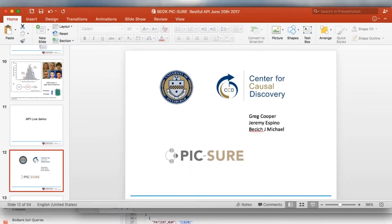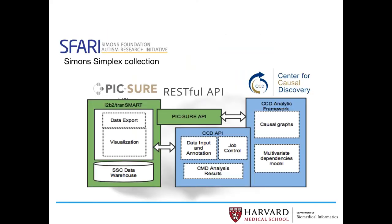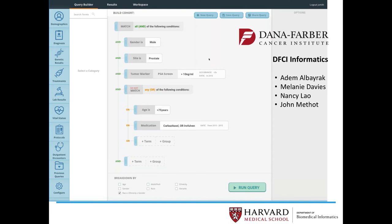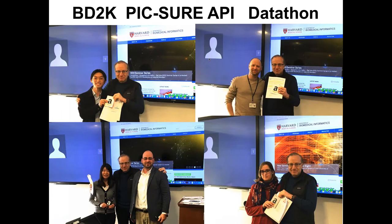I'll show three examples of collaboration using this API. The first is with the BD2K Center for Causal Discovery — with Greg Cooper, Jeremy Espino, and Bennett Middlekauff — where they have a high-throughput Bayesian network and causal graph framework. We expose our data using our API so they can use their framework, and we can visualize their results. This is a fruitful collaboration linking two different APIs.